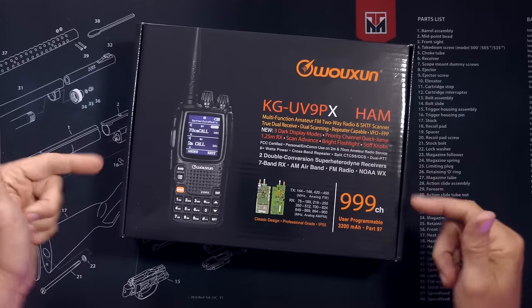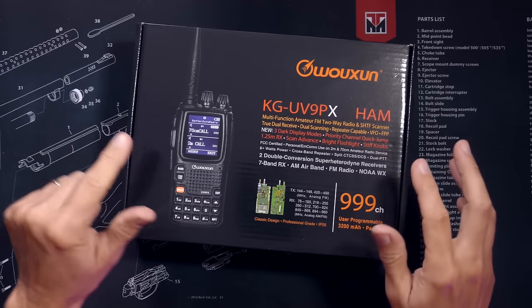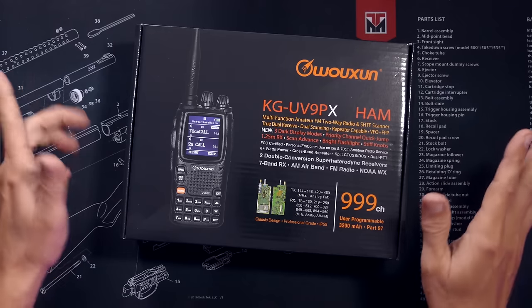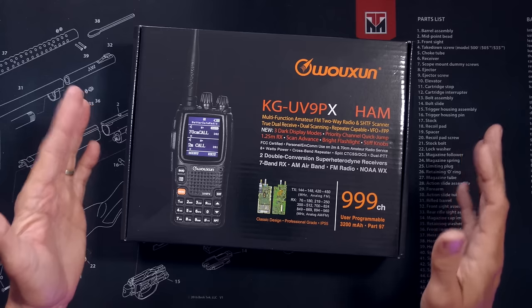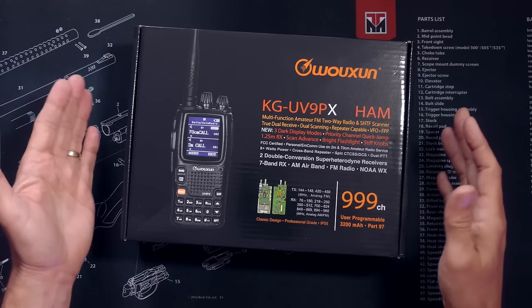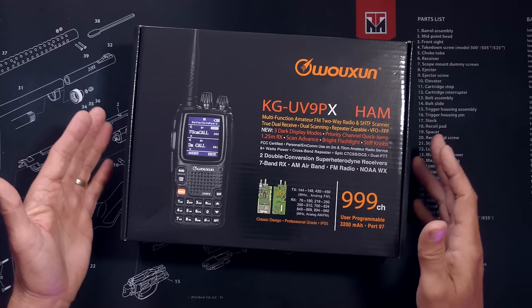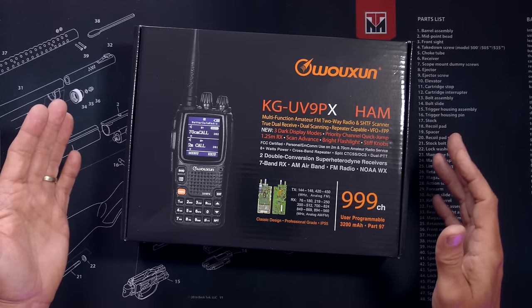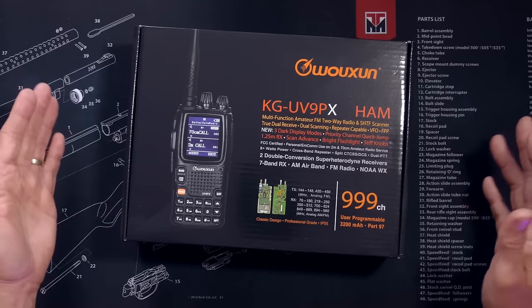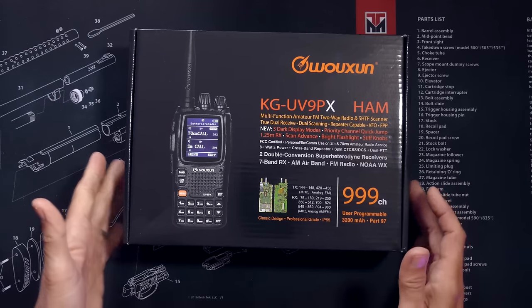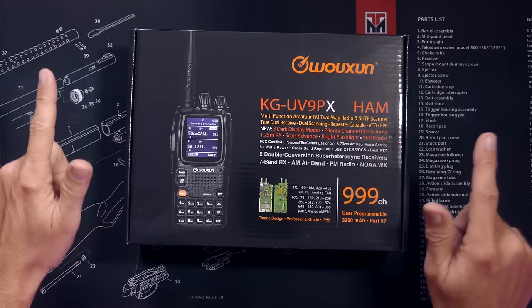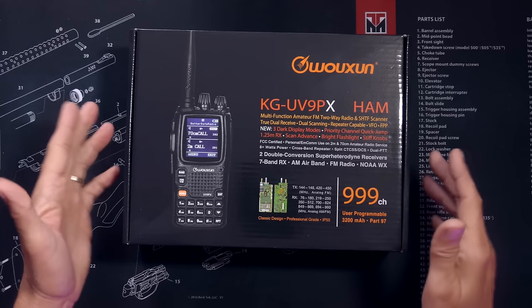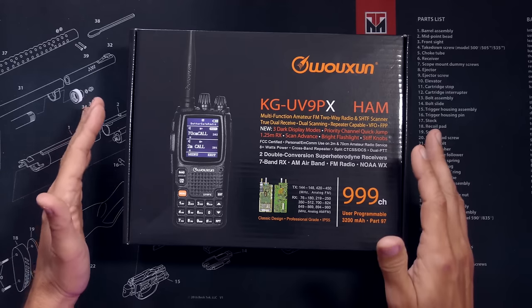The price for the Wuxin Ocean KG-UV9PX ham radio is, as of today, and I say as of today because in this world prices change, the price for this radio is, as of today, $187. Affiliate link below, and BetterSafe Radio did send me this radio at no cost so that I could share it with you.